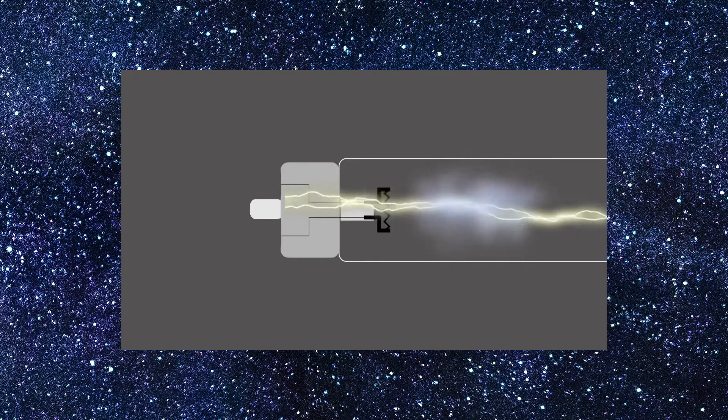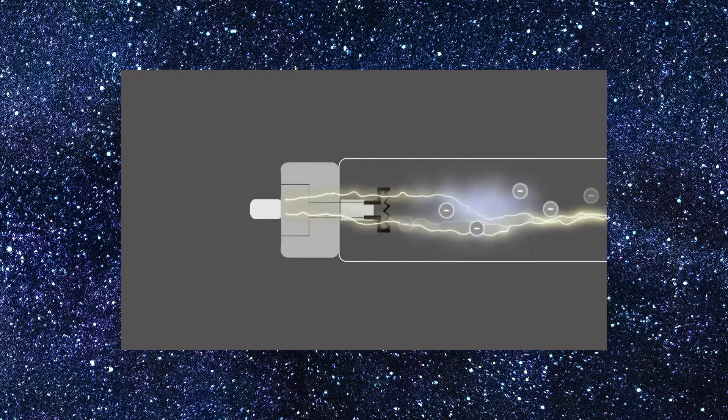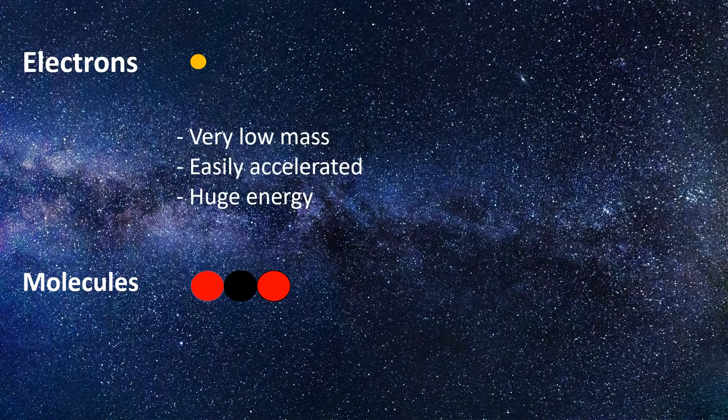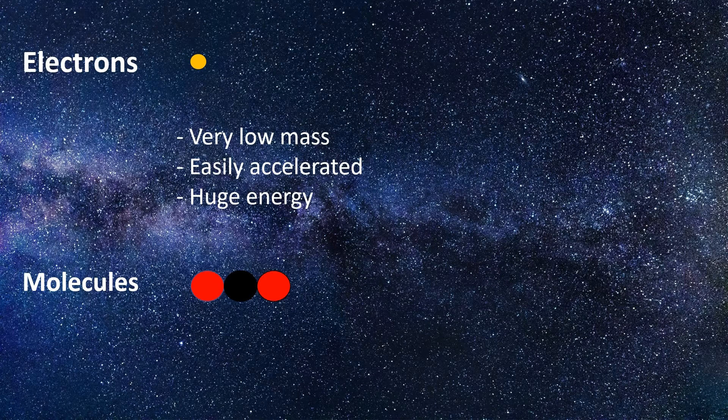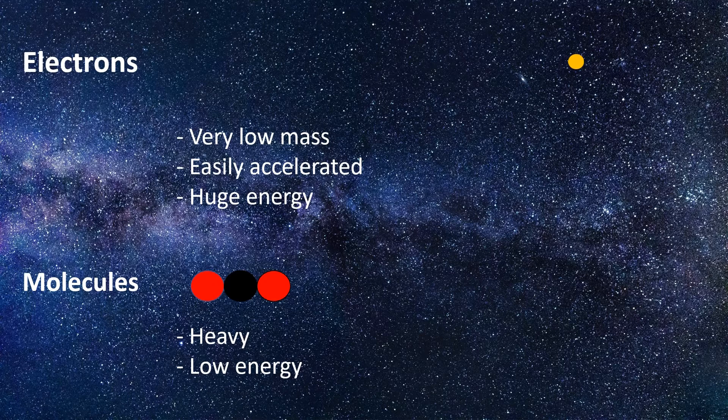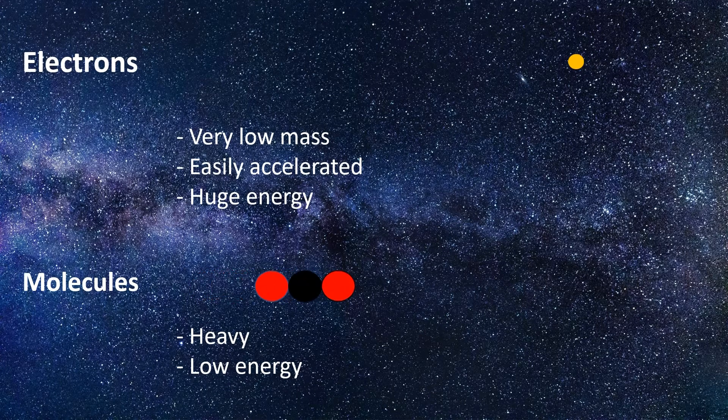If the electric field is high enough, some electrons are stripped out from the atoms and the plasma is created. The electrons are much lighter than the other species in the gas, and therefore they are easily accelerated by the electric field and acquire a huge energy while the other species remain at room temperature.